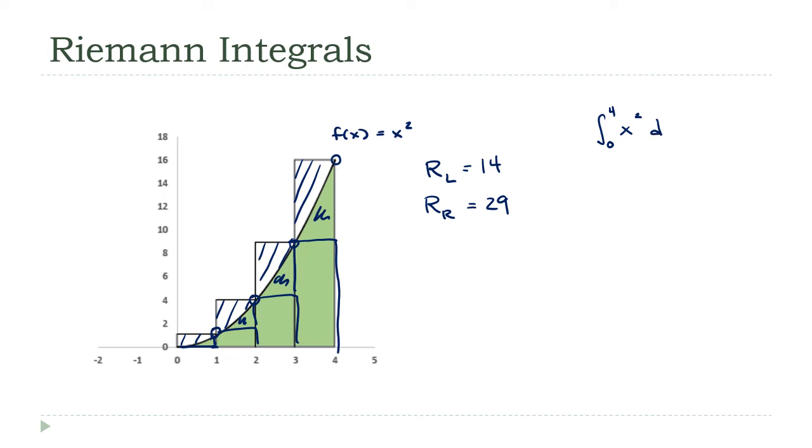One thing we're going to want to do in the very last lecture is talk about what's the error here—how much error can we expect. We can use that to pick out which method is going to be best in a given circumstance. The exact area here is 64/3, which is 21.33 repeating, so you can see neither of these is really giving us a very good result for just four intervals.